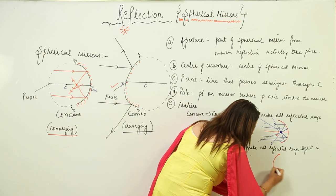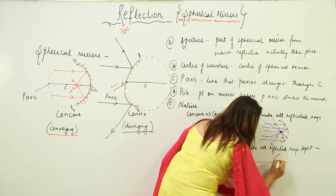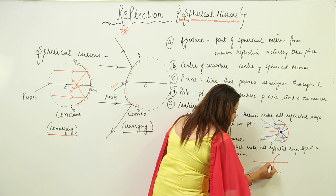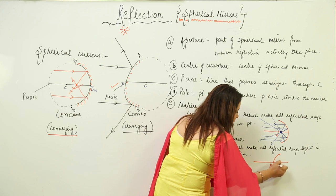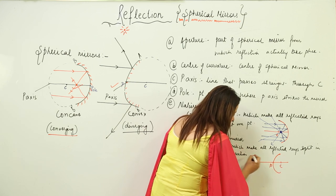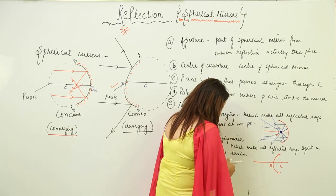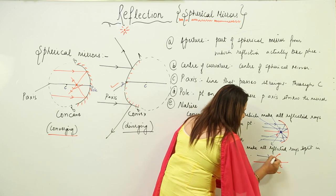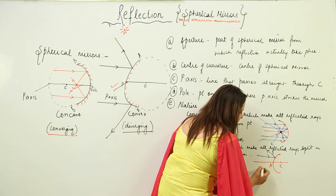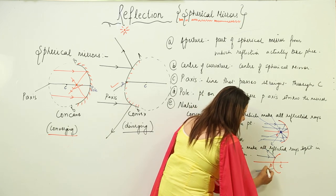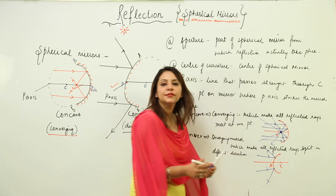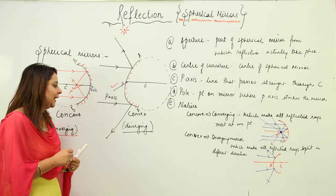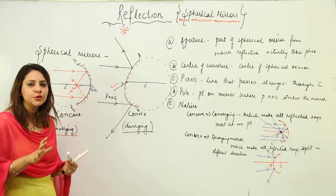Drawing the figure again: let this be the convex mirror with principal axis, pole, and center of curvature. A ray falls on it, reflects back, and splits in a different direction. So this is what we mean by a diverging mirror — the reflected rays spread apart rather than converging.